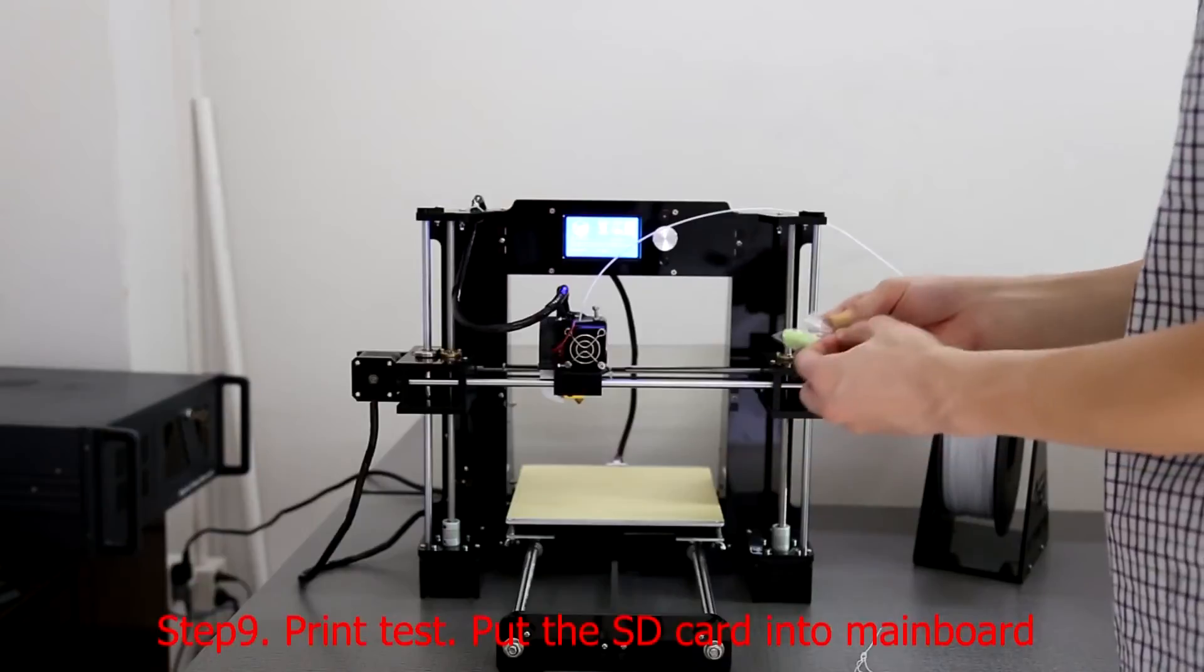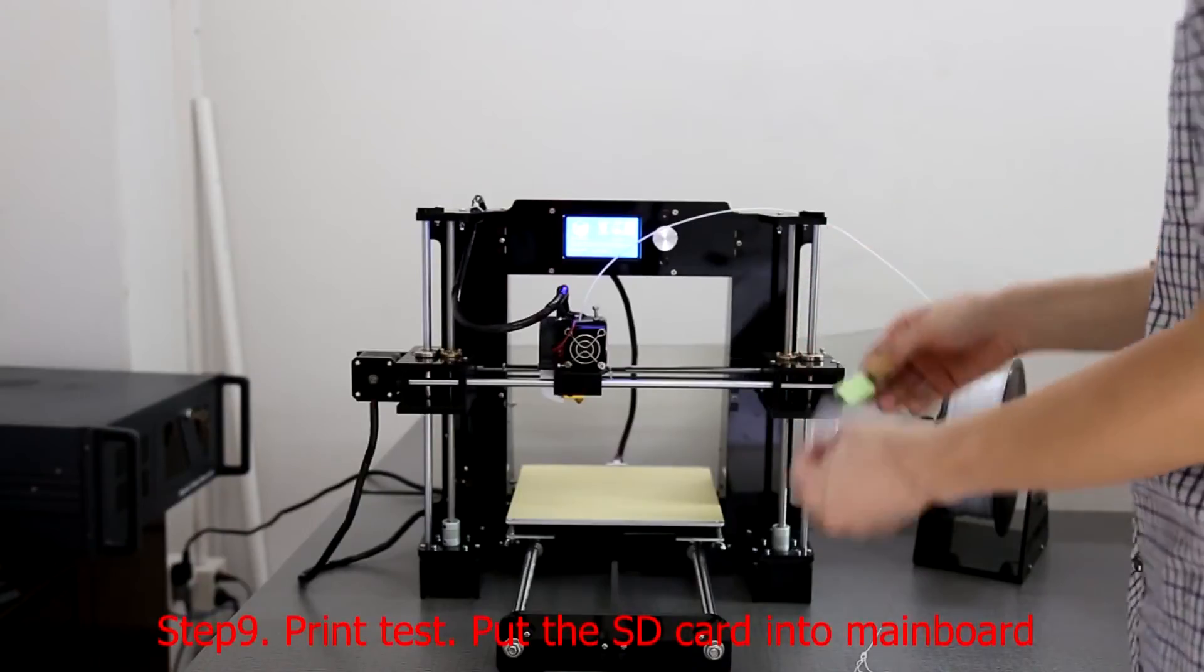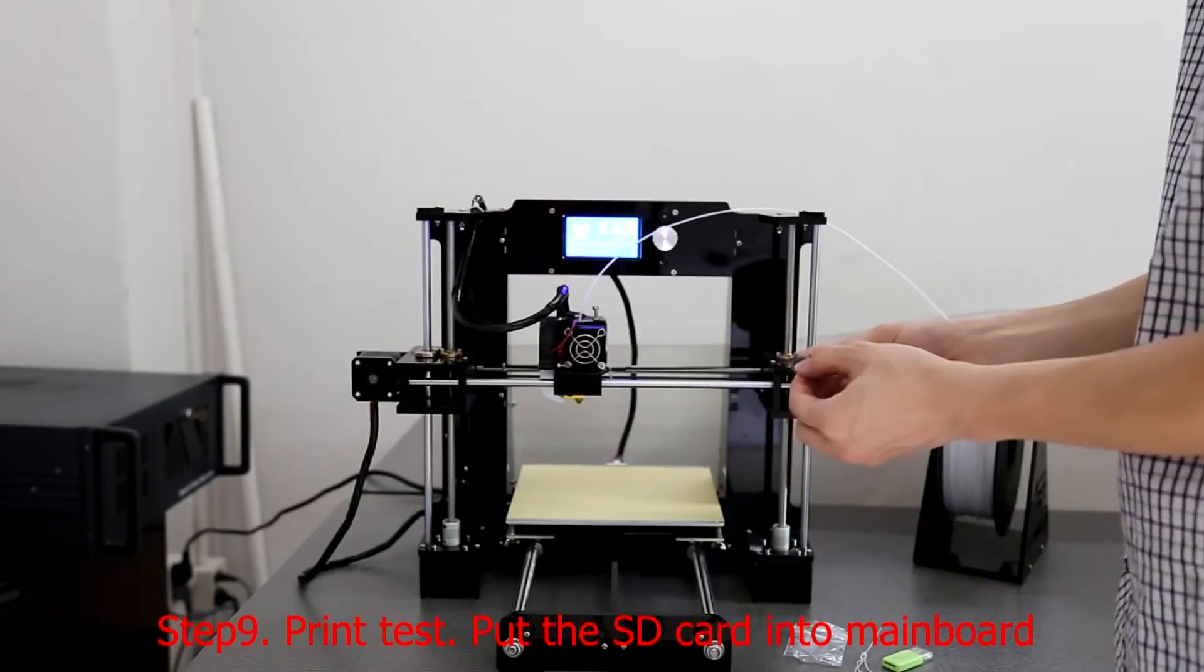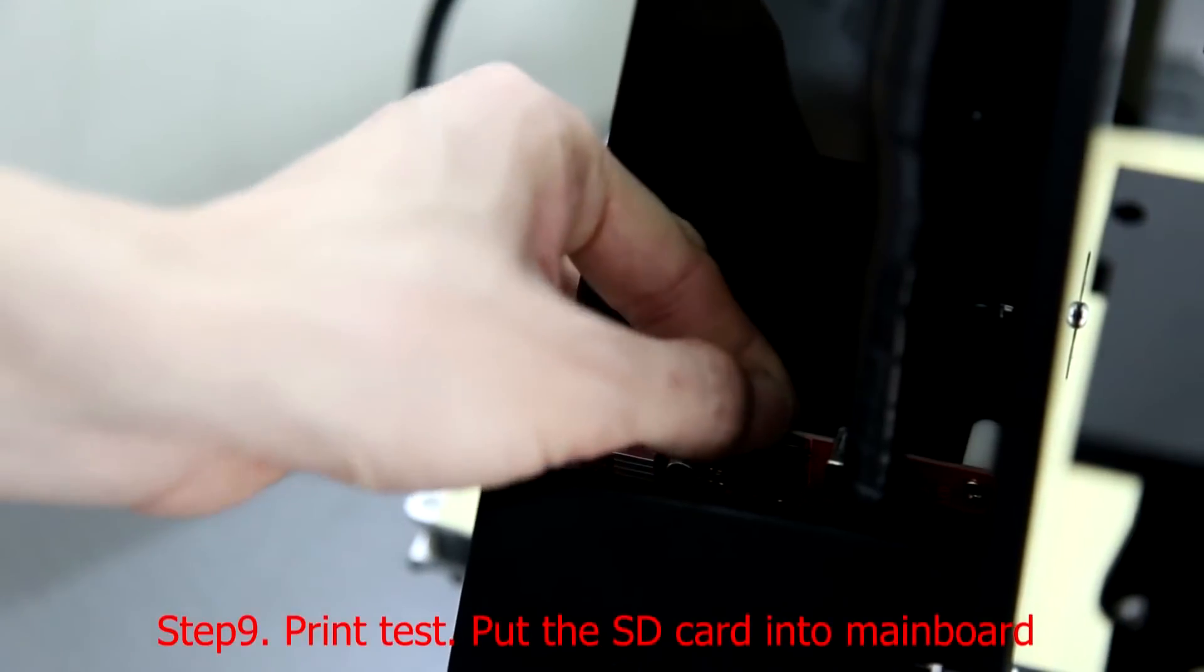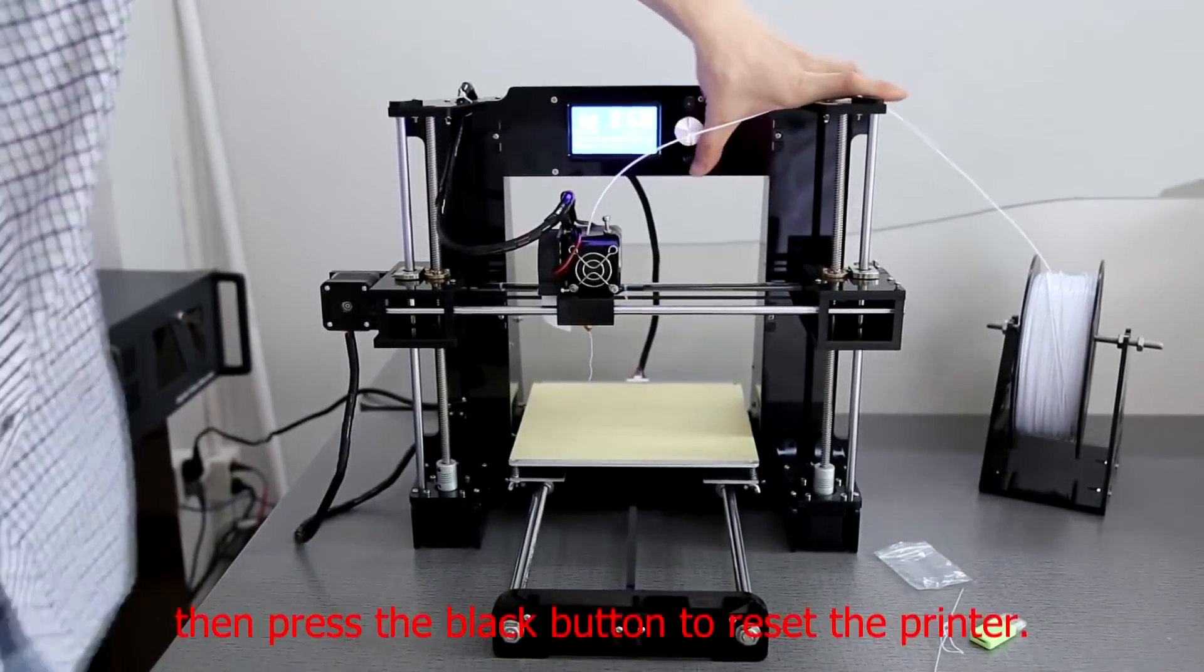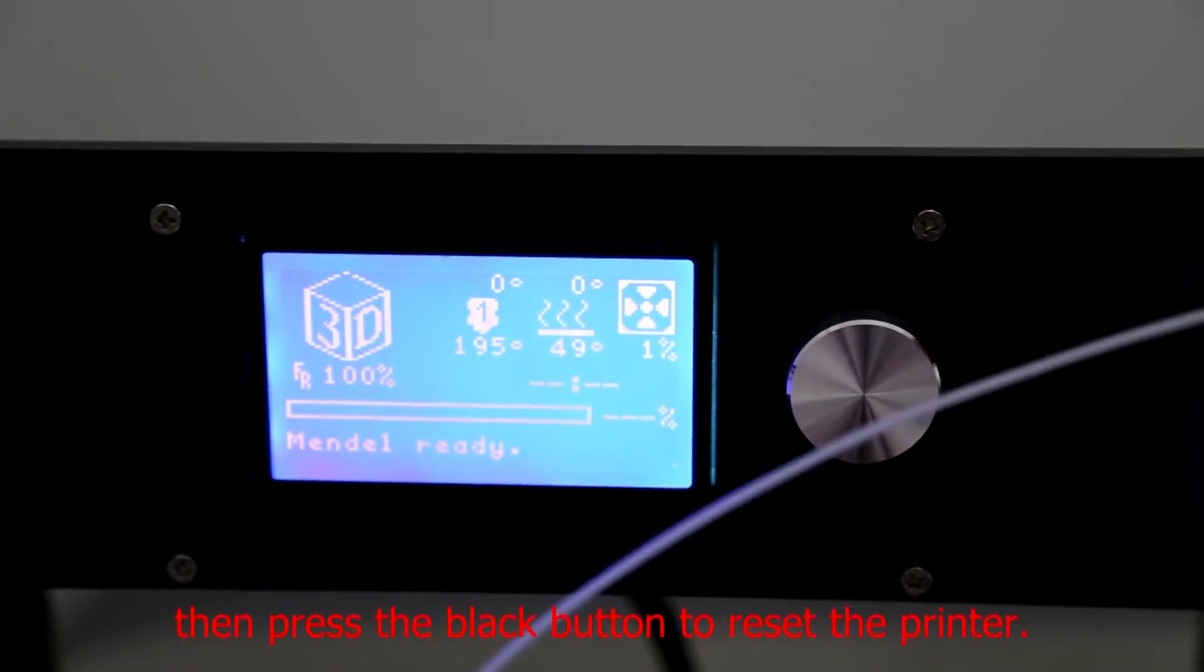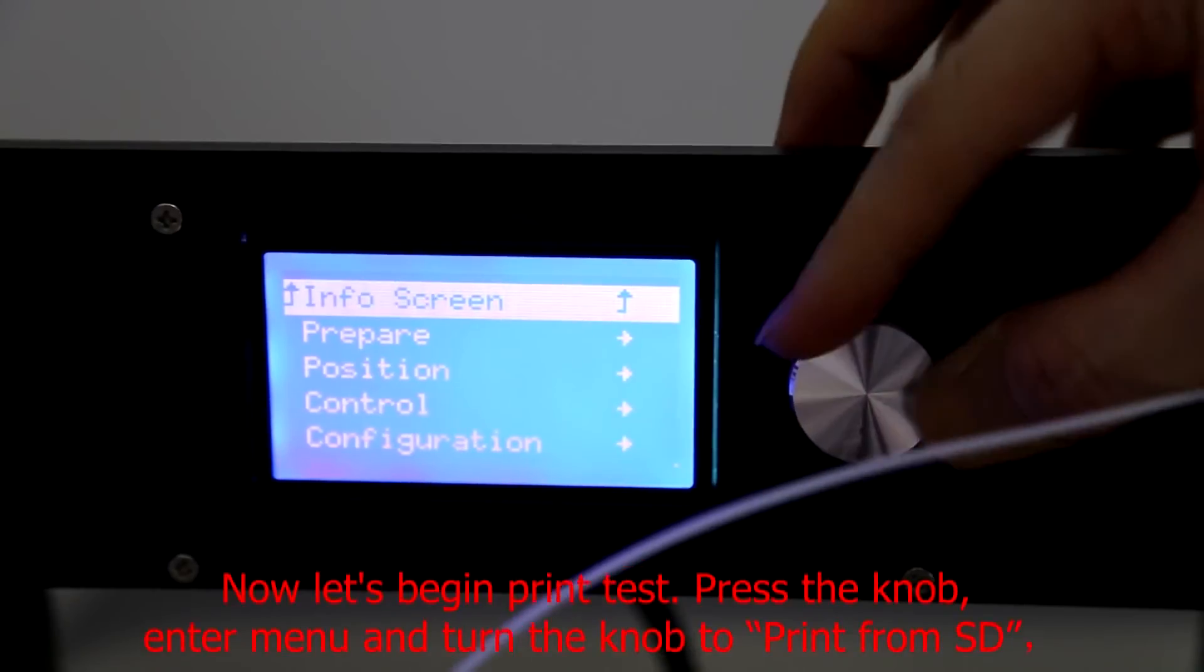Step 8: Print test. Put the SD card into the main board. Then press the black button to reset the printer. Now let's begin the print test.